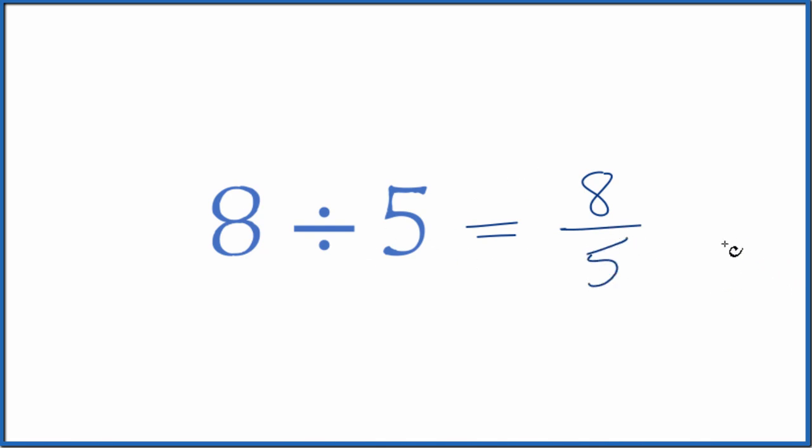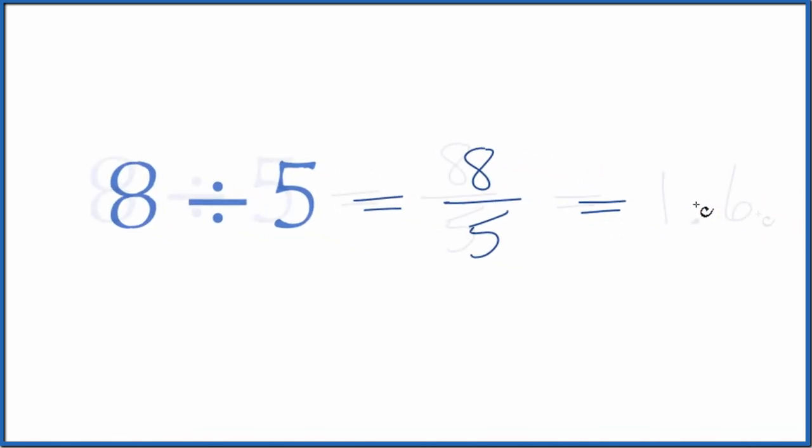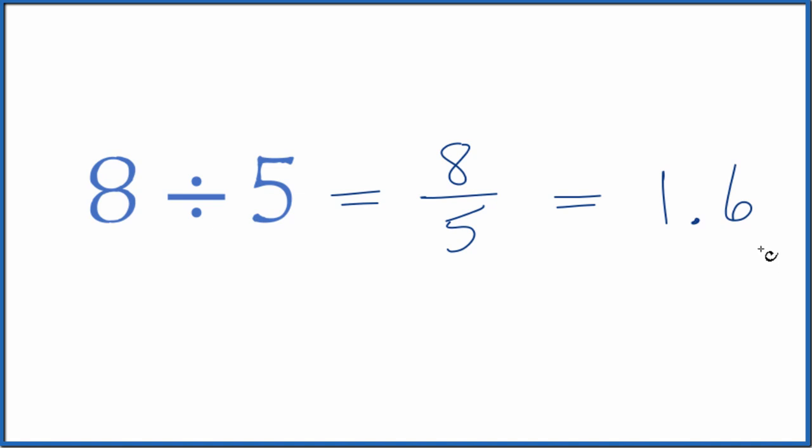The other is on our calculator, we could divide 8 by 5, right here, 8 by 5. That would give us 1.6. So 8 divided by 5 is equal to the fraction 8 fifths or the number 1.6.